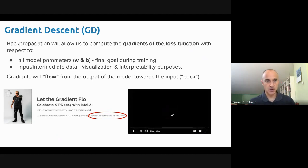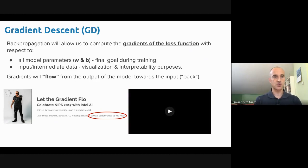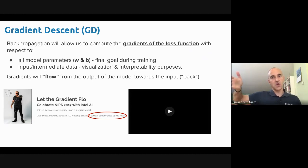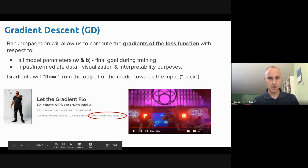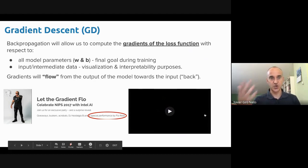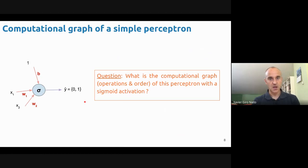Backpropagation will allow us to compute the gradients of the loss function with respect to all the model's parameters, which is what we want to estimate. The gradients will flow from the output of the model — where we compute the loss — backwards through the network, updating the parameters. That's actually why at the NeurIPS conference, Intel presented one of their latest chips alongside a flow rider, as a joke about 'letting the gradients flow.' Let's try to understand how we can estimate parameters in a neural network, focusing on the simple case of just a perceptron.